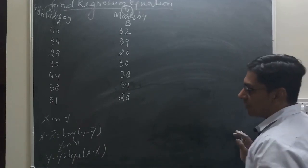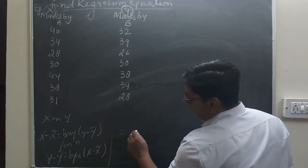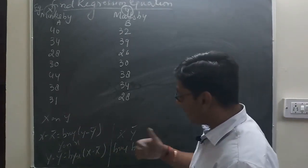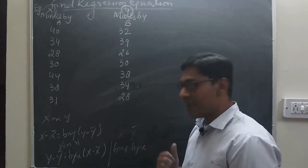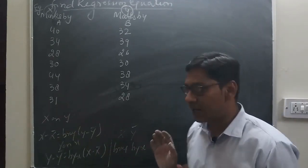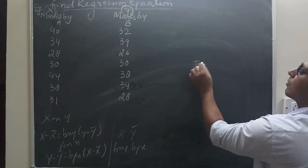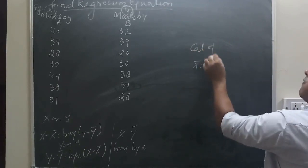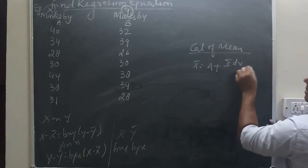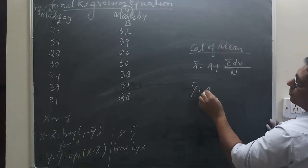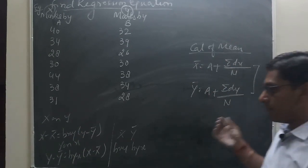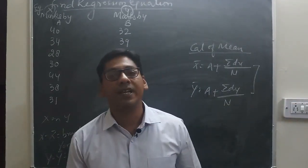So, what do we need to find? x̄ and ȳ, bxy and byx — that's it. We have the x̄ and ȳ formula; we have to remember the bxy and byx formula because we use the shortcut method. x̄ = a + (Σdx / n) and ȳ = a + (Σdy / n). These two formulas we will use, and when we compute bxy and byx we will use dx and dy.